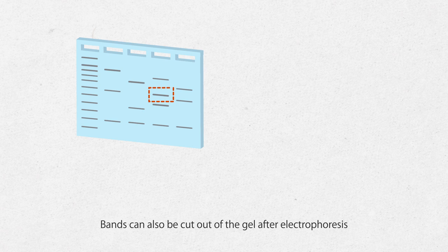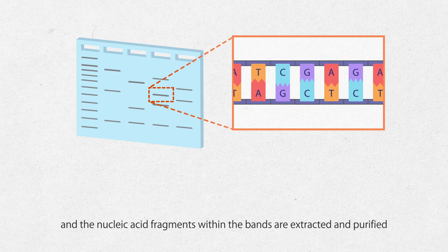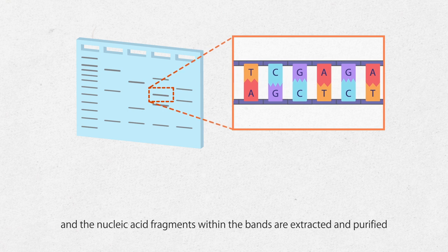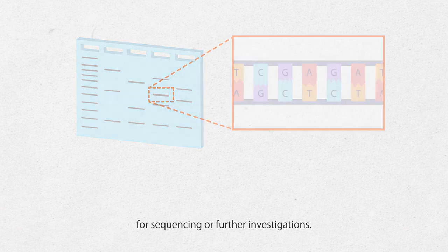Bands can also be cut out of the gel after electrophoresis and the nucleic acid fragments within the bands are extracted and purified for sequencing or further investigations.